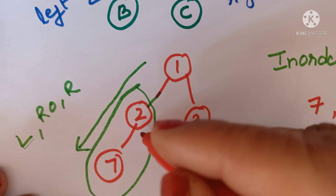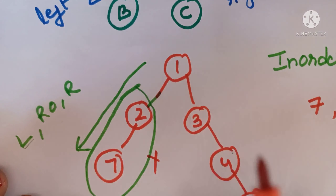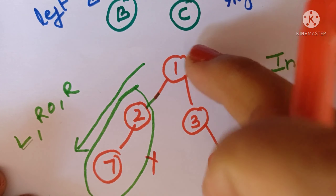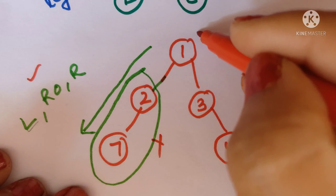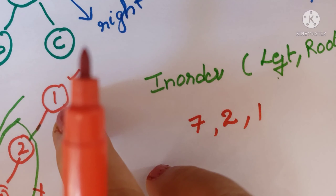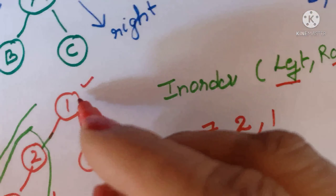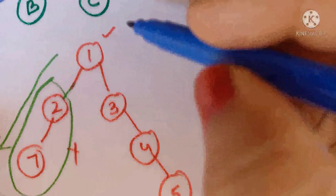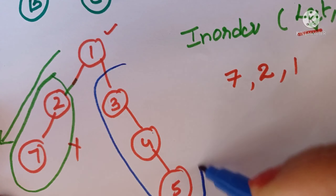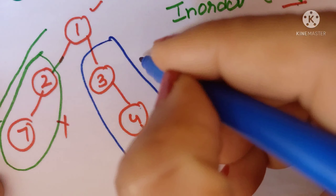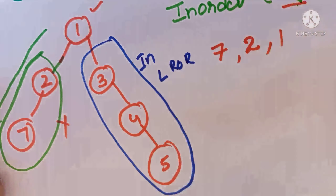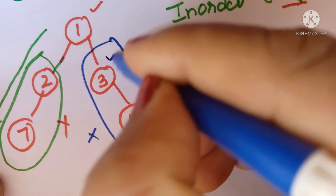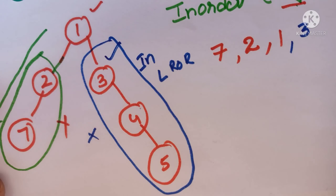Left sub-tree 7, 2 is complete. No right child of 2. Then go to root of main tree: write 1. Now go to right sub-tree: 3, 4, 5. No left child of 3, so write root 3. Then go to right sub-tree of 3 which is 4 and 5.